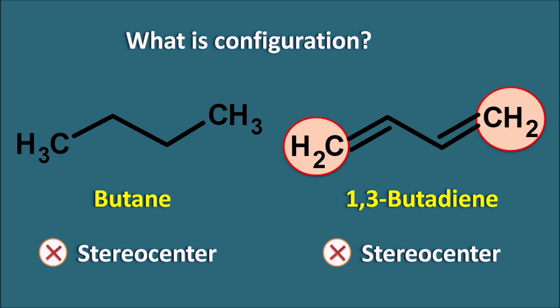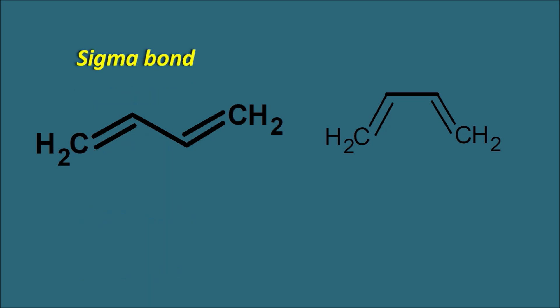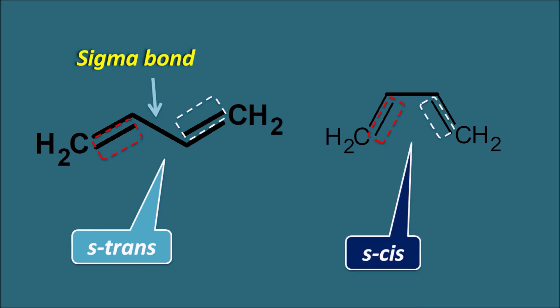But still 1,3-butadiene can show different configurations within the space. We can represent the structure in one way, and we can also represent 1,3-butadiene in another way. In the first structure, the pi bonds are connected by a single bond — a sigma bond — and one pi bond is below the sigma bond while another is above, meaning they are in opposite directions. Therefore, this type of diene is the S-trans diene, having a trans configuration with respect to the sigma bond. In the second structure, the pi bonds are on the same side of the sigma bond, so this configuration is the S-cis configuration. Thus, 1,3-butadiene can exist in two configurations with respect to the sigma bond: either S-trans or S-cis.